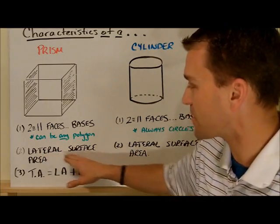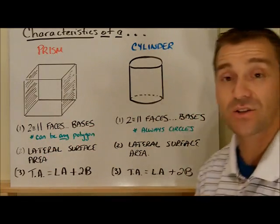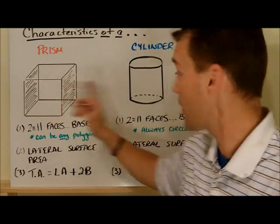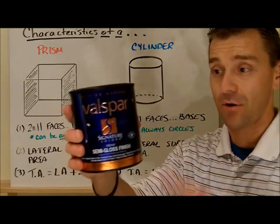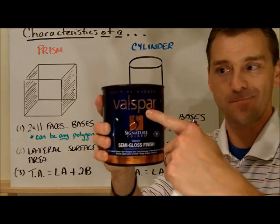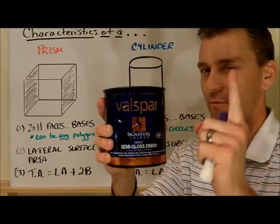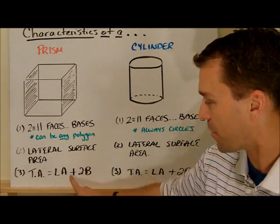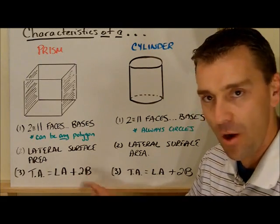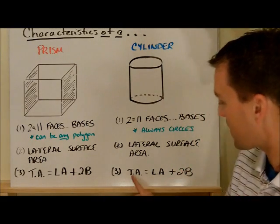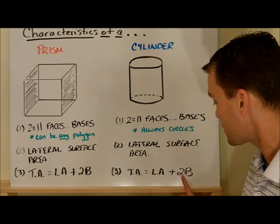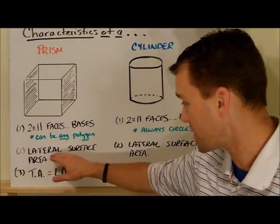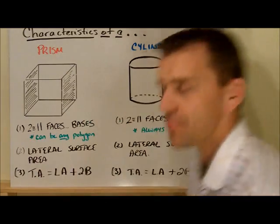Now over here we have lateral surface area. We have lateral surface area of this, which is actually taken care of a little bit different, because in prisms, all the faces are flat. Well this thing here, this part, that certainly isn't flat. It's a circular piece. How do I find the surface area? We'll find out. And then the last thing is total surface area. It's the lateral surface area plus two times the area of the base. So that is exactly the same. So let's dive in this a little bit more.